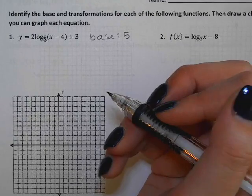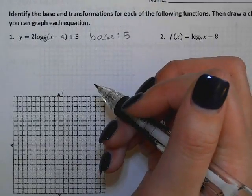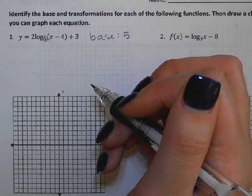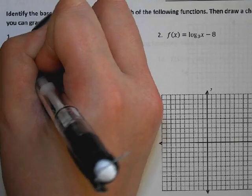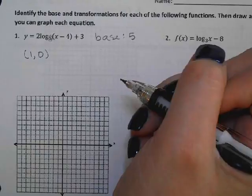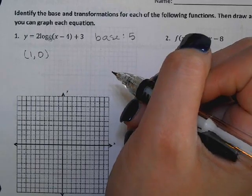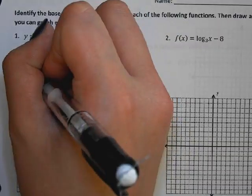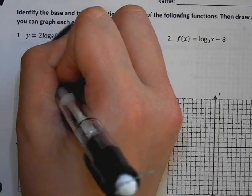Now yesterday when we were dealing with exponential functions, the first point was (0,1). So since this is the inverse, what's our first point? (1,0). And then for the other one, if we plugged in 1, we'd get the base. So what are we going to do this time? Plug in the base and we're going to get 1, so I'll plug in a 5 and that would give me a 1.